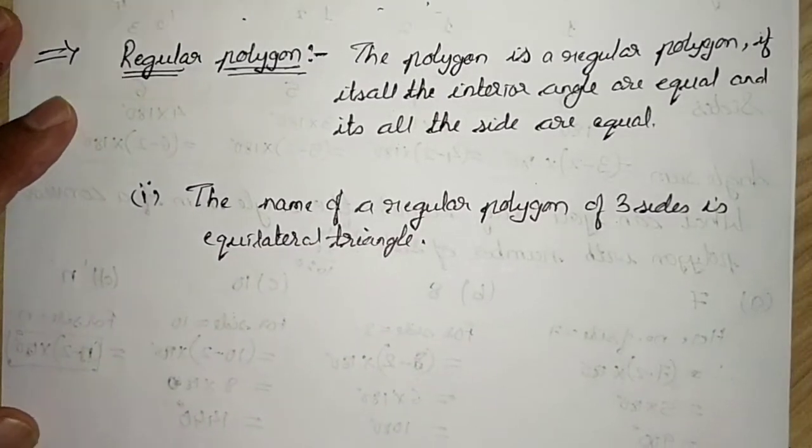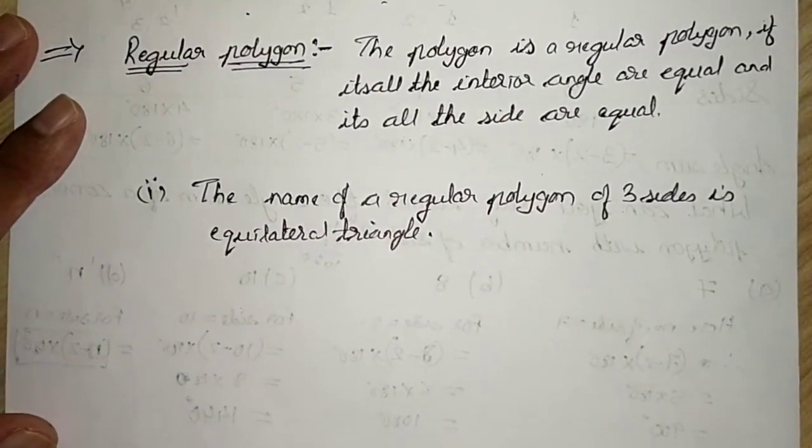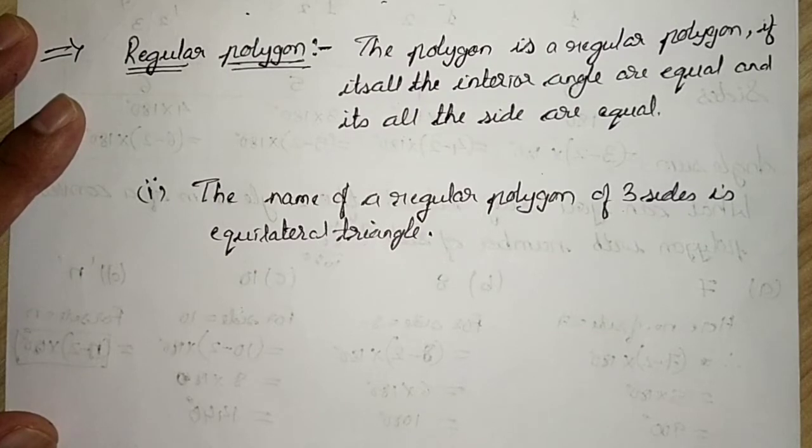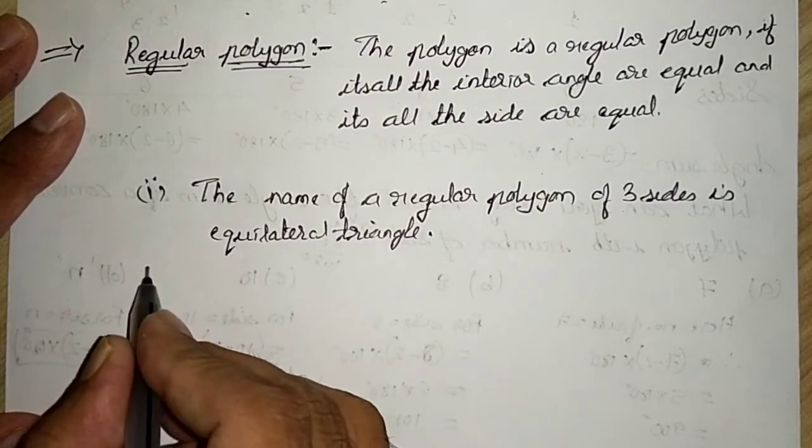Because in an equilateral triangle, all three sides are equal and all three angles are also equal, each measuring 60 degrees.